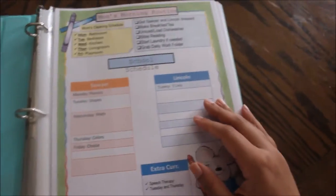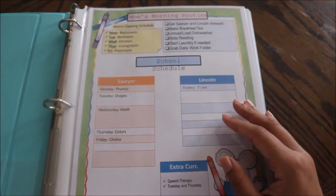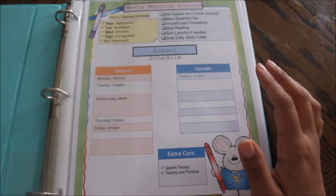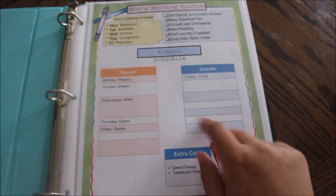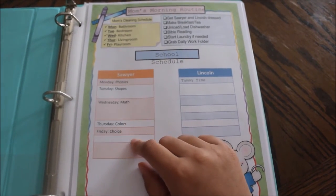Right in the beginning, we have mom's morning routine. And Lincoln obviously has tummy time because he is only seven weeks old. And Sawyer, this is just his weekly schedule.